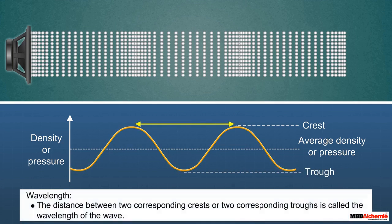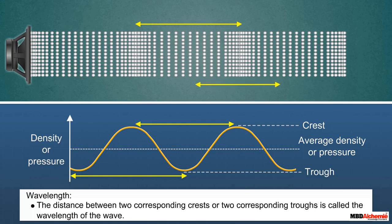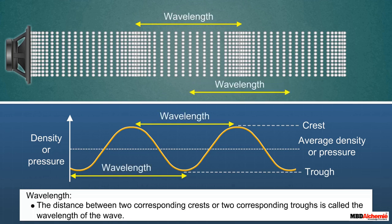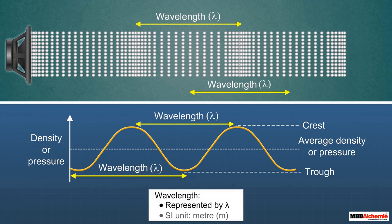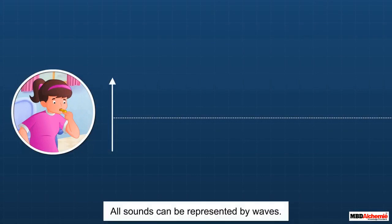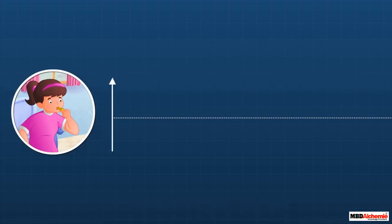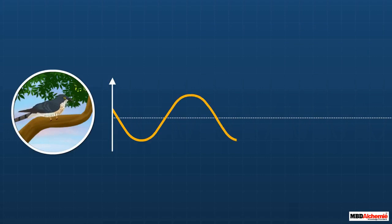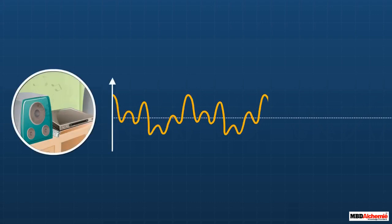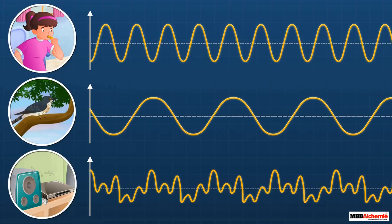The distance between two corresponding crests or two corresponding troughs — or the distance between two consecutive compressions or rarefactions — is called the wavelength of the wave. Wavelength is represented by the Greek letter lambda, and its SI unit is meter. All sounds can be represented by waves, and each sound has its own wave.